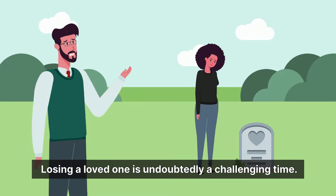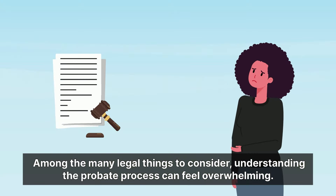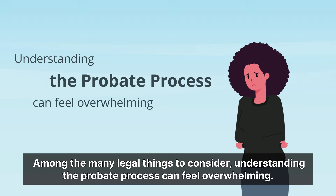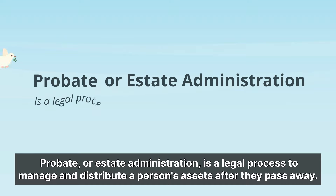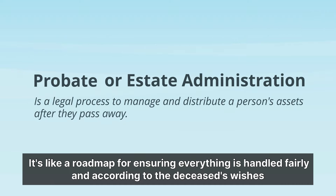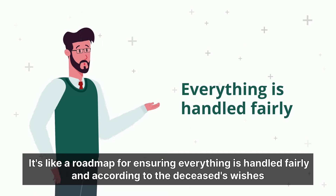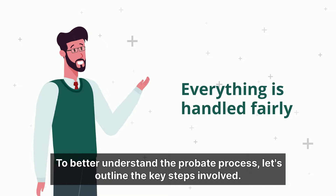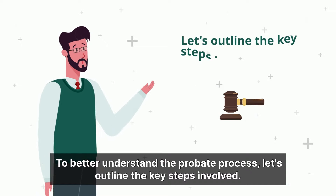Losing a loved one is undoubtedly a challenging time. Among the many legal things to consider, understanding the probate process can feel overwhelming. Probate, or estate administration, is a legal process to manage and distribute a person's assets after they pass away. It's like a roadmap for ensuring everything is handled fairly and according to the deceased's wishes, or state law if there's no will. To better understand the probate process, let's outline the key steps involved.